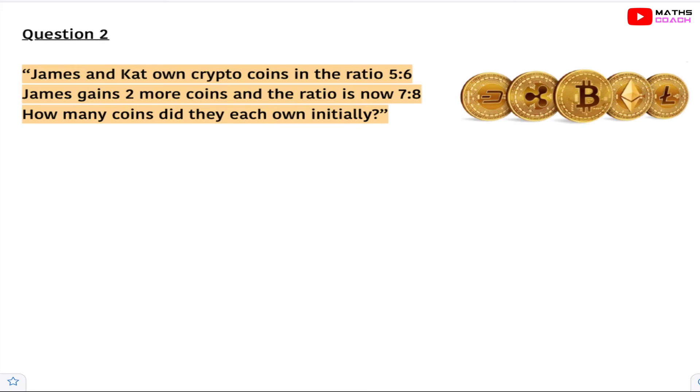So we have James and Kat who own crypto coins in the ratio 5 to 6. James gains two more coins and the ratio is now 7 to 8. How many coins did they each own initially? Let's put down some statements. So J and K for James and Kat are in the ratio 5 to 6. Once again we don't know how many coins they had originally so we can write 5x and 6x. Now James gains two more coins.